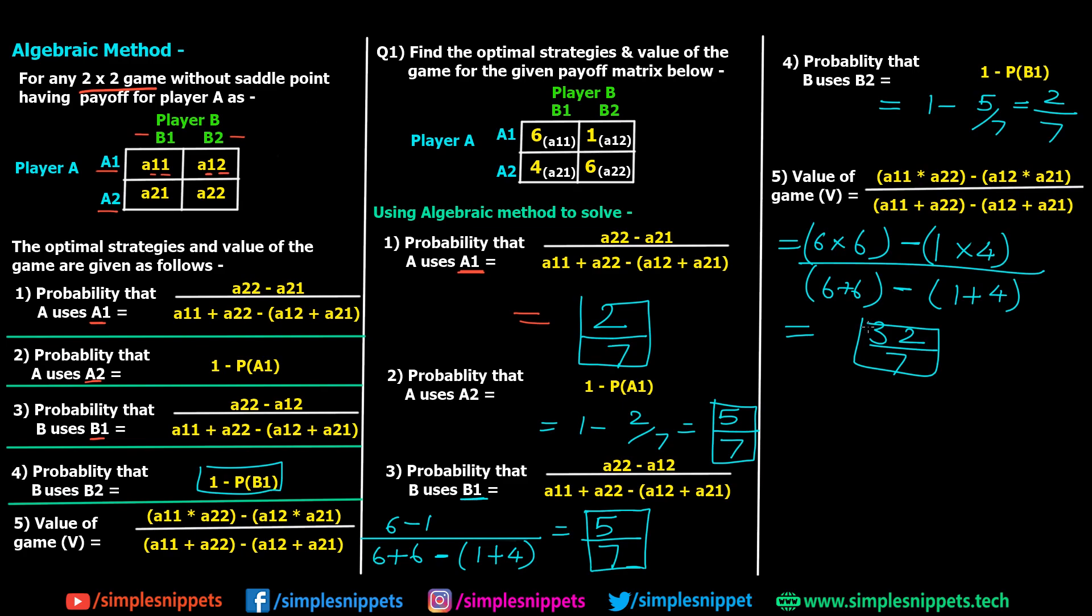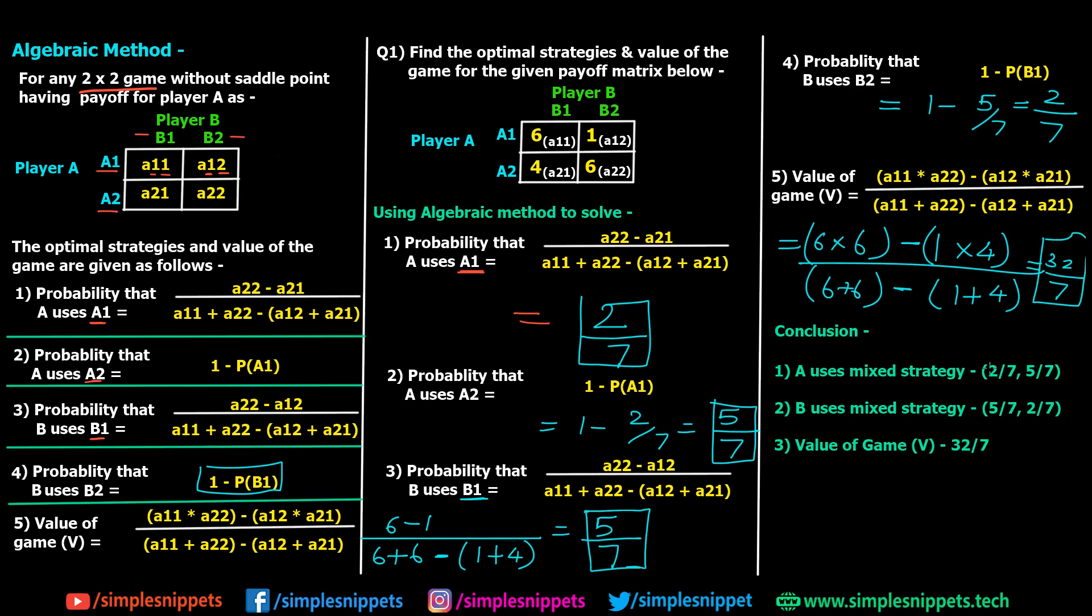Just concluding the entire numerical with the final answer as follows: A uses mixed strategy which is given by 2 by 7 and 5 by 7, so A1 and A2. B uses mixed strategy 5 by 7, 2 by 7, so this is B1 and B2. And lastly, value of the game is 32 by 7.